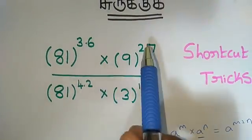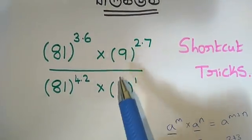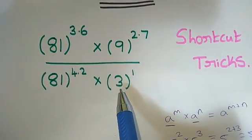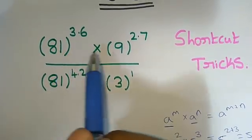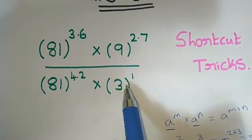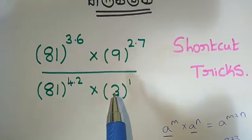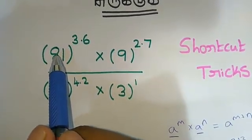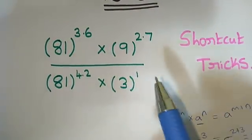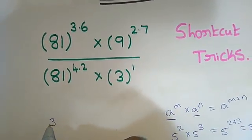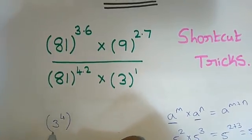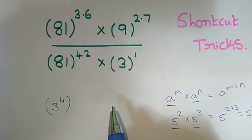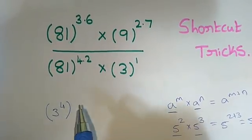Next is: if we have a power raised to another power, we multiply the exponents. For example, 3 power 4 means 3 power 4, so 3 to the power 4 — we do our multiplication.